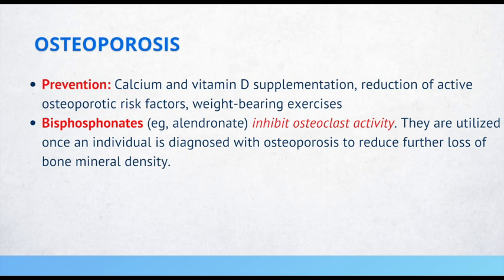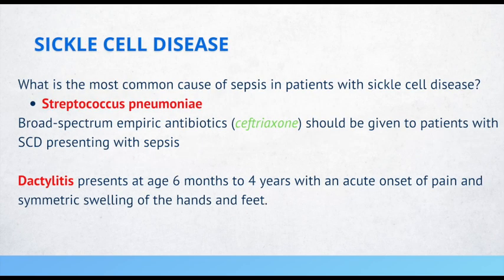Dactylitis presents between 6 months and 4 years of age with acute onset of pain and symmetric swelling of the hands and feet. If you see this, especially in African-American patients, you want to consider sickle cell disease. The most common cause of sepsis in patients with sickle cell disease is Strep pneumoniae. Broad-spectrum empiric antibiotics such as ceftriaxone should be given to these patients presenting with sepsis.